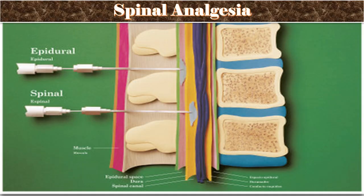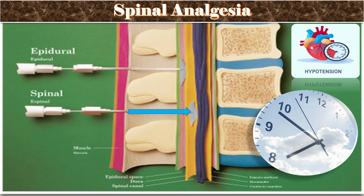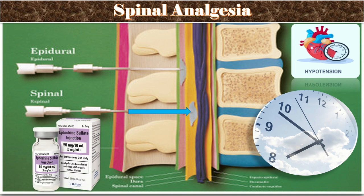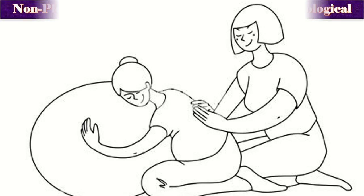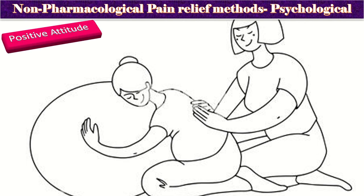Now we will talk about spinal analgesia. The spinal injection is given in the subarachnoid space, which is effective for two to four hours. Hypotension secondary to distal vessel dilatation is a very common problem with spinal analgesia. To manage this, injection ephedrine 30 milligrams is given, diluted to 10 ml with normal saline, giving a concentration of 3 milligrams per ml.